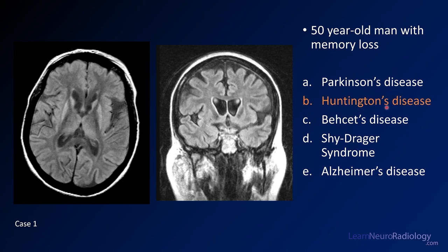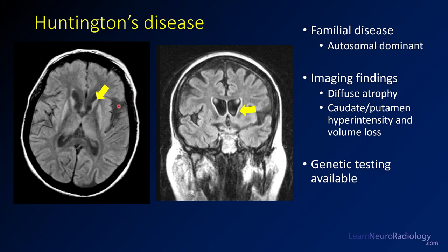The answer to this case is Huntington's disease. The caudate and putamen are abnormal bilaterally — you have atrophy and abnormal T2 hyperintensity. On the coronal, you can appreciate that the distance between the caudates is increased — the intercaudate distance is increased. Huntington's disease is an autosomal dominant disease passed by a series of trinucleotide repeats. Often there's a family history of abnormal movements or early dementia. Genetic testing is available for this.